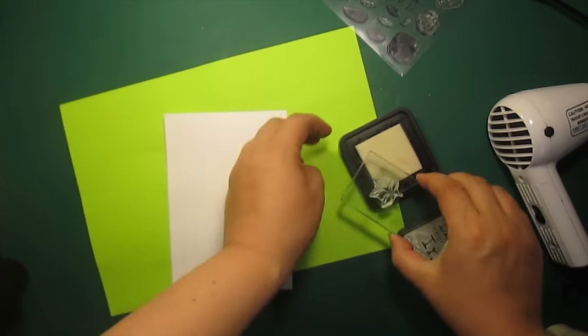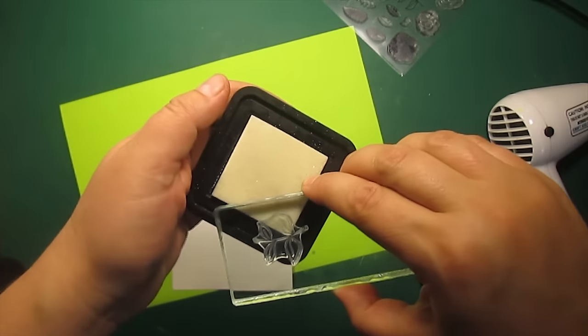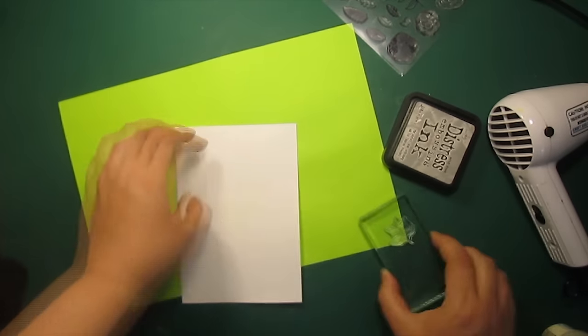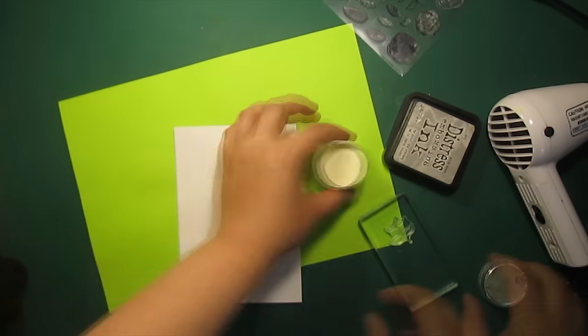Then I'll be using this leafy stem stamp to add the leaves. I'm going to ink up the leaves one by one and stamp them just as I did with the flowers.